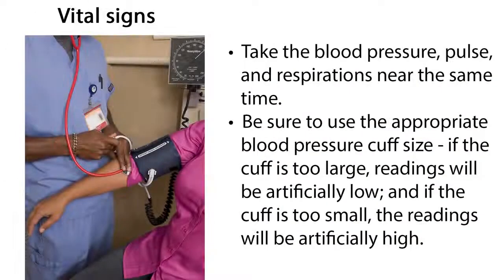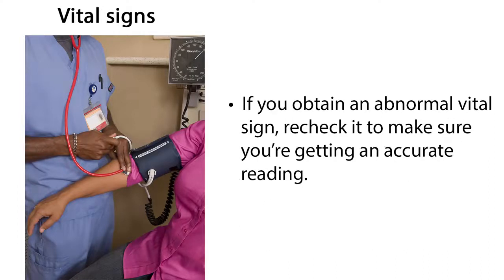When checking vital signs, take the blood pressure, pulse, and respirations near the same time. Be sure to use the appropriate blood pressure cuff size. If the cuff is too large, readings will be artificially low, and if the cuff is too small, the readings will be artificially high. If you obtain an abnormal vital sign, recheck it to make sure you are getting an accurate reading.